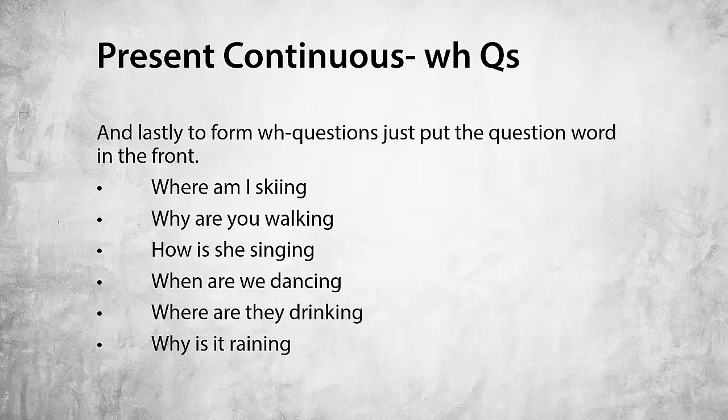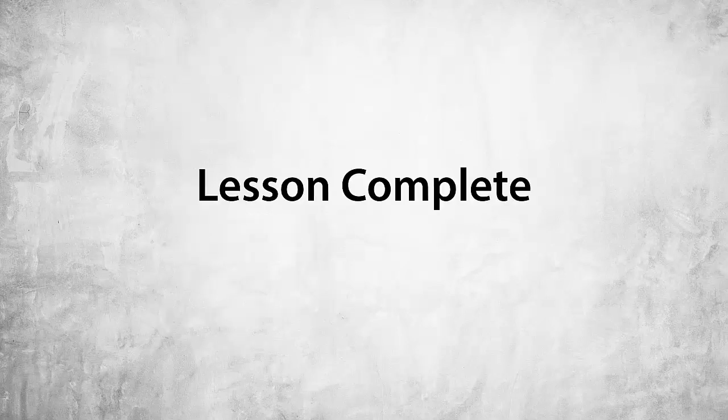To form WH questions, just put the WH word in the front. Where am I skiing? Why are you walking? How is she singing? When are we dancing? Where are they drinking? Why is it raining? And that is all you need to know about the forms of the present continuous tense.